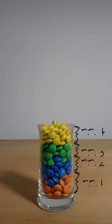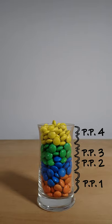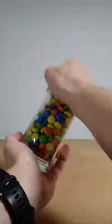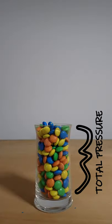The pressure of each individual gas in a mixture is called partial pressure. By adding up the partial pressures of each individual gas, we obtain the total pressure exerted by the mixture.